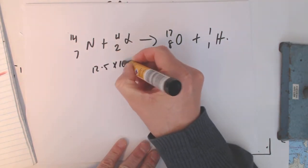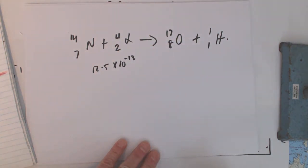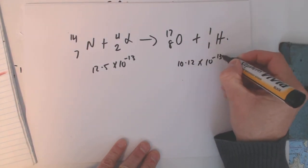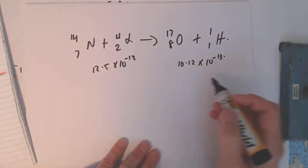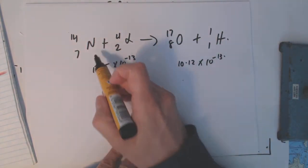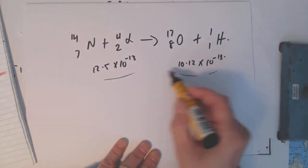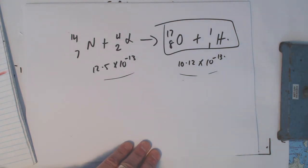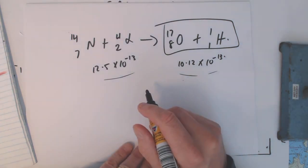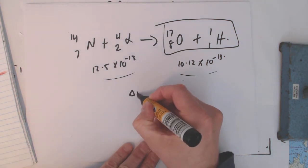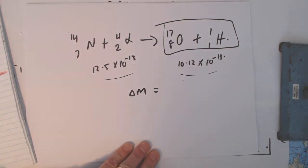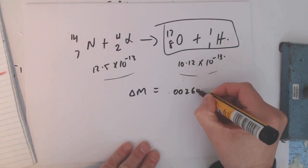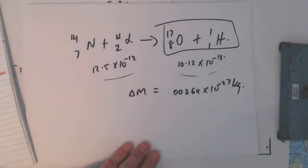So on this side, we have a kinetic energy of 12.5 times 10 to the minus 13. And we've got a kinetic energy on this side, which is 10.12 times 10 to the minus 13. So you've got a small difference in kinetic energy, a decrease. And that small difference in the energies would have to be made up by an increase in mass on that side. So you can have it going either which way. And that increase in mass is, I think, comes out to some ridiculously small number, 0.00264 times 10 to the minus 27 kg, which is very small.